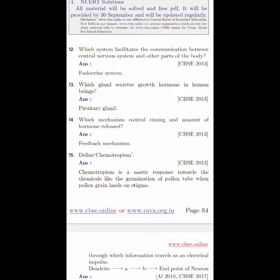Define chemotropism. Chemotropism is a nastic response towards the chemicals like the germination of pollen tube when pollen grain lands on stigma. This is the example of chemotropism.